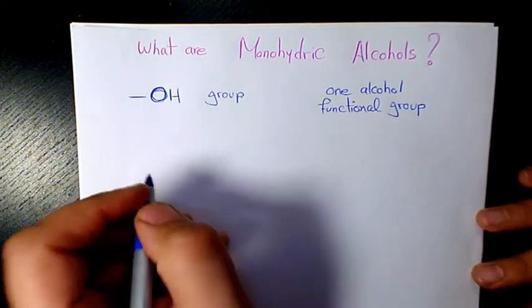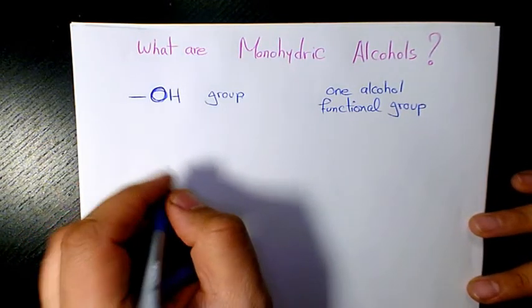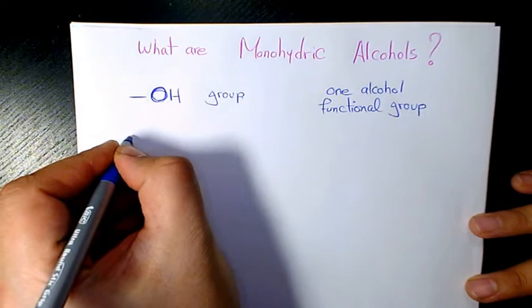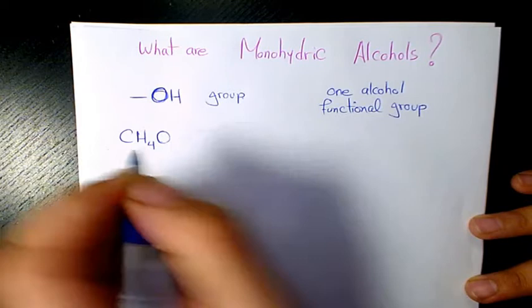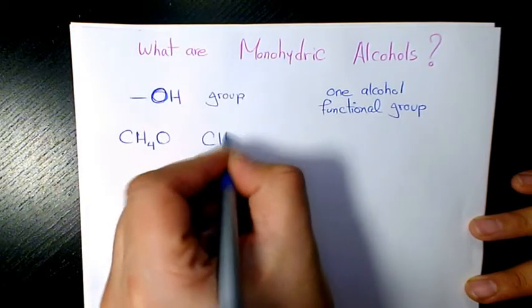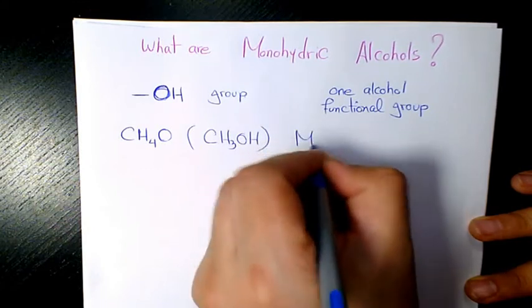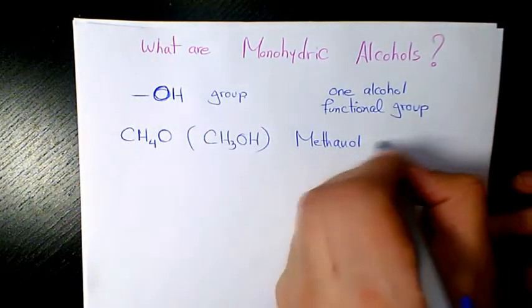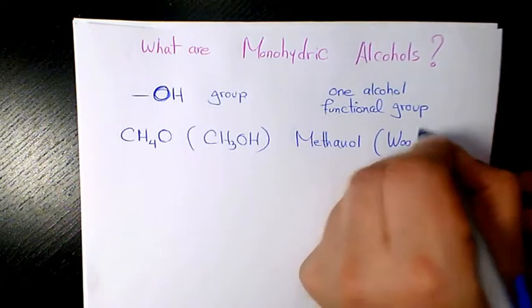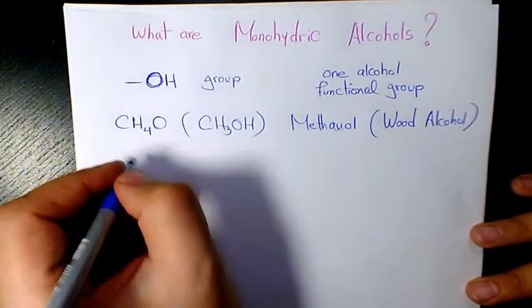So what are the simplest monohydric alcohols? The simplest one is CH4O, or we can say CH3OH. Both are correct, and we call it methanol, or sometimes called wood alcohol.